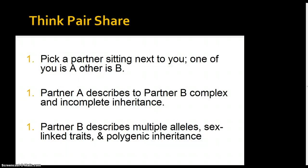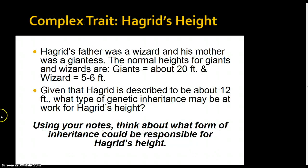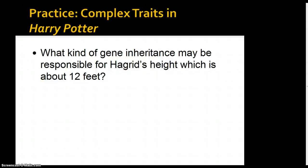You can skip the next slide — we're not going to work with that one today. For practice, we look at Hagrid from Harry Potter and his height. His father was a wizard and his mother was a giantess — normal heights are about 20 feet for giants and 5 to 6 feet for wizards. Knowing Hagrid is about 12 feet tall, we'd suspect this follows incomplete dominance, since his height is a midpoint between his parents' heights. We'll get more practice with these in class.